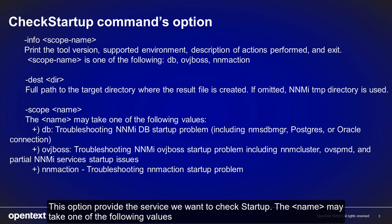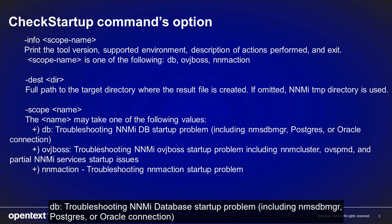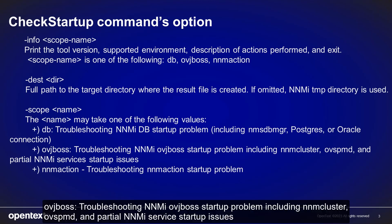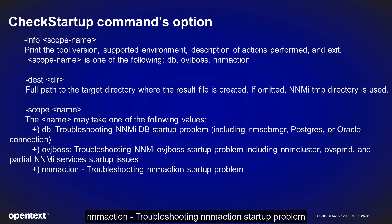The name may take one of the following values. Db — for troubleshooting NNMi database startup problems, including NMS, BBMRG, PostgreSQL, or Oracle connection. OVGbox — for troubleshooting NNMi OVGbox startup problems, including NNM cluster, OVS, PMD, and partial NNMi service startup issues. NNM action.